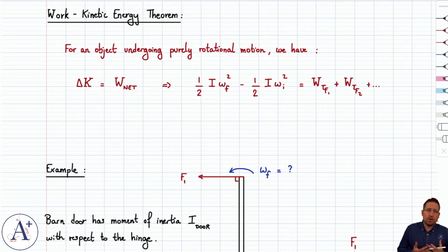Of course, if you have rotational motion, you have to update delta K equals work net by including, rather than one-half mv squared, one-half I omega squared, the rotational kinetic energy, and instead of the work done by each force, you want the work done by the torque created by each force.